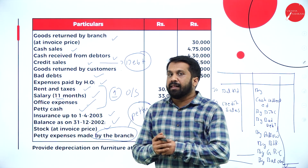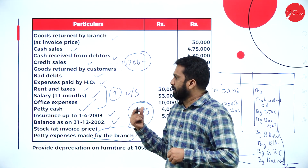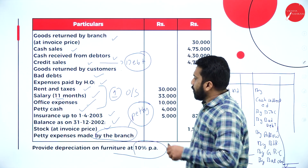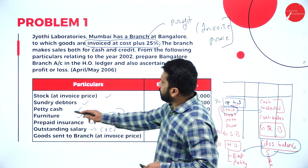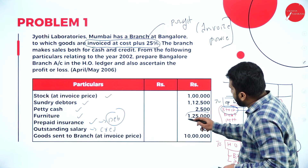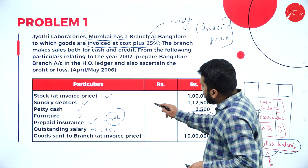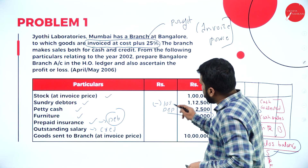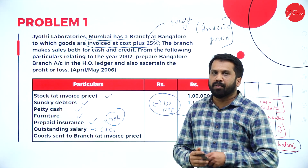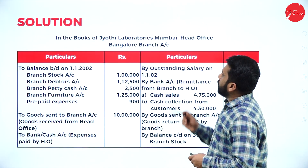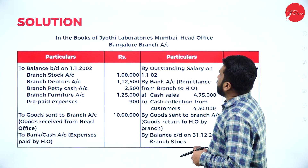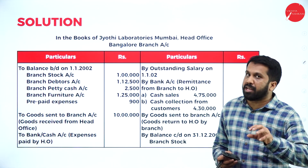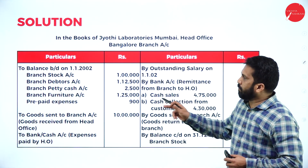Provide depreciation on furniture at 10%. Your opening furniture is one lakh twenty-five thousand; minus 10% gives you the depreciation. So in the books of Jyothi Laboratory Mumbai head office, this is the branch stock account. Whatever I explained, keep it in mind.